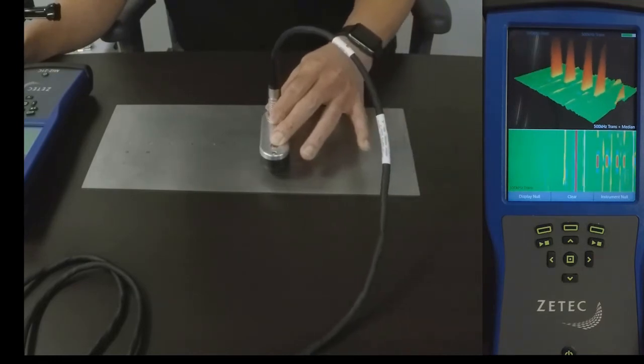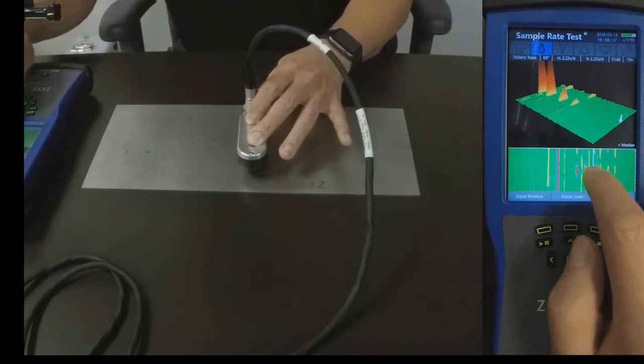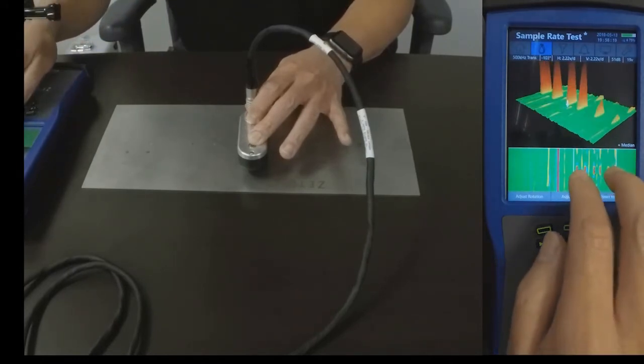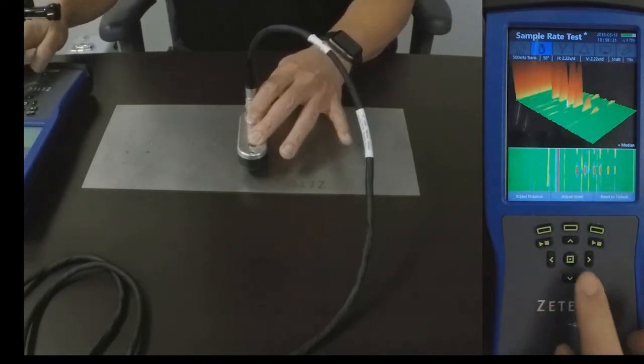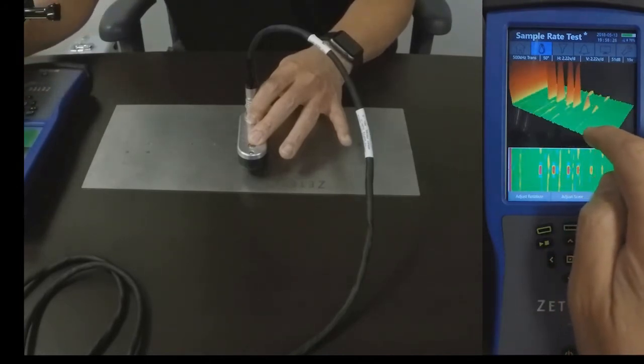To review the data, just select the Acquire button again. The data can be adjusted using the touch screen interface. As you can see, all six EDM notches are easily visible.